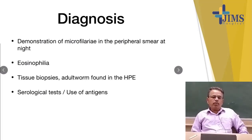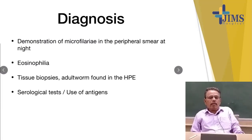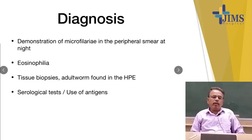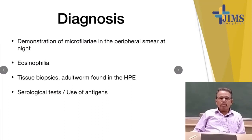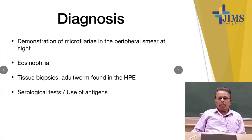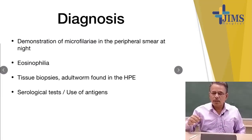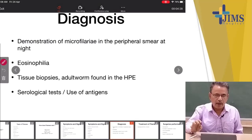Diagnosis: by physical examination and tests. Demonstration of microfilaria in the peripheral blood smear — usually at night, because microfilaria enters circulation during the night, so blood must be taken at night. There may be increased eosinophilia. Tissue biopsy will show adult worms on histopathological examination, and serological tests using antigens should also be done.